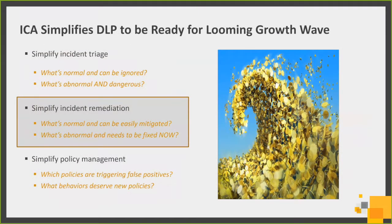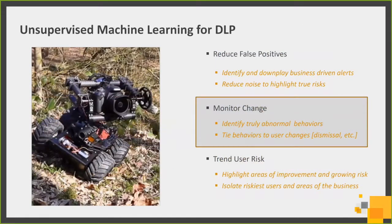Part of that is being able to optimize incident triage — understanding what's normal and can be ignored, what needs to be dealt with later, and what's abnormal and dangerous and needs to be handled right now. This means handling things from a user perspective rather than an incident-by-incident perspective, and simplifying and optimizing your policies to minimize false positives and to focus on those behaviors and activities that matter the most.